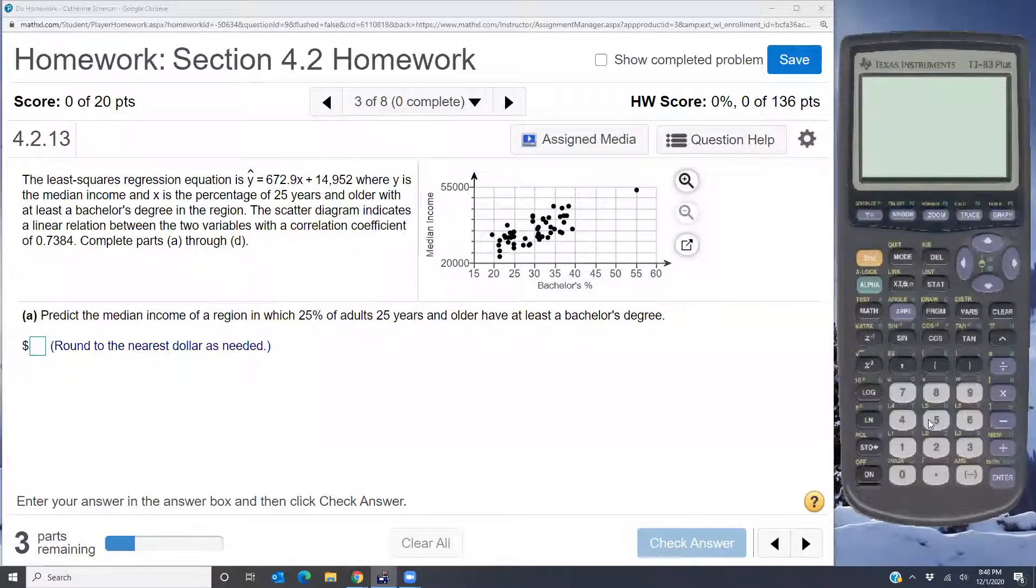This is a help video for section 4.2 problem 3. The problem says the least squares regression equation is y hat equals 672.9x plus 14,952, where y is the median income and x is the percentage of 25 year olds and older with at least a bachelor's degree in the region.